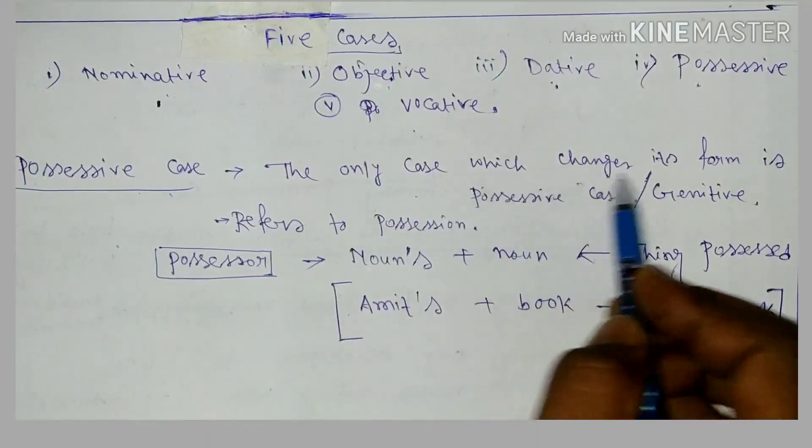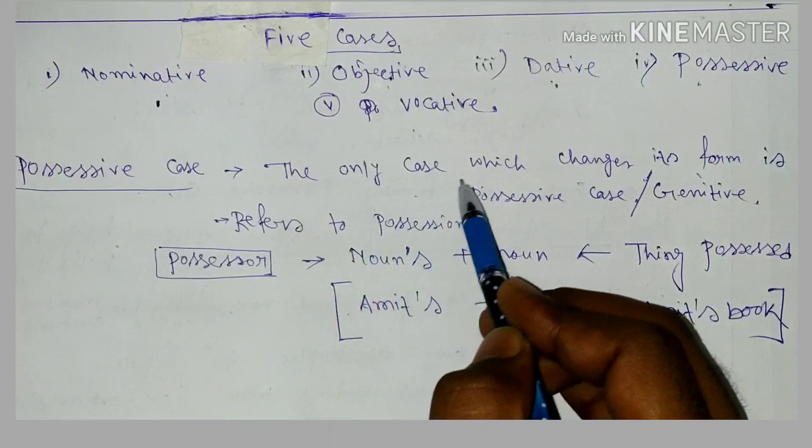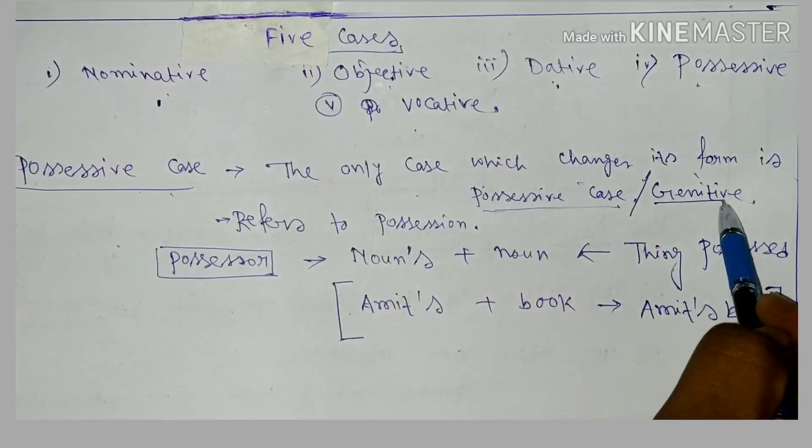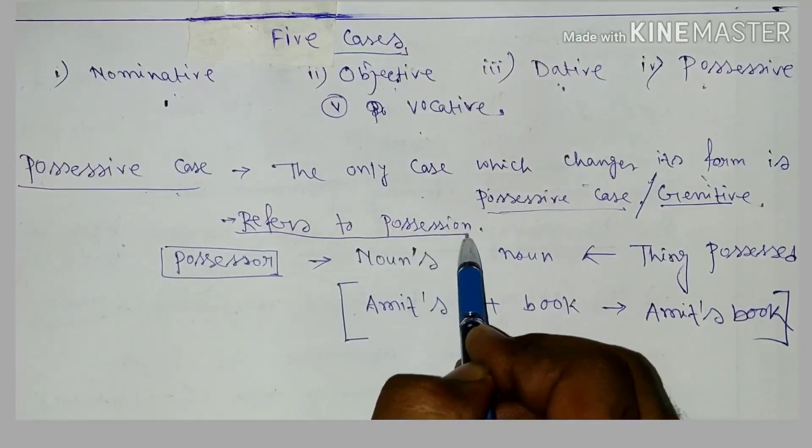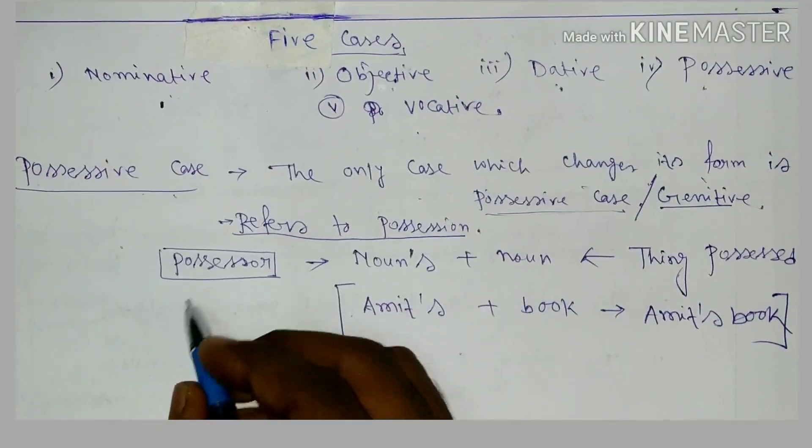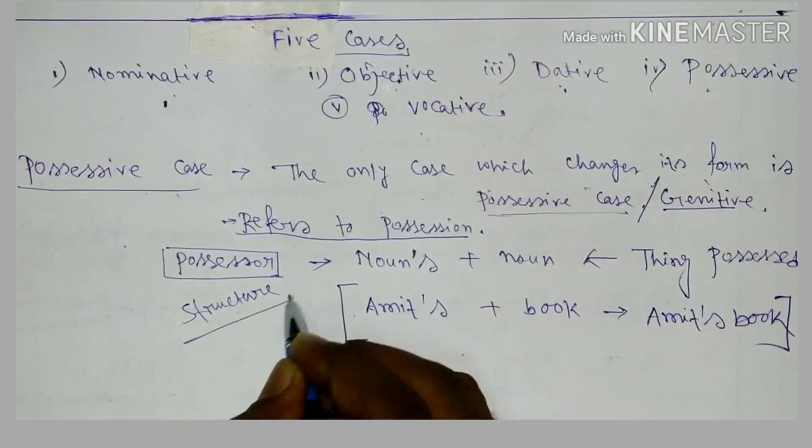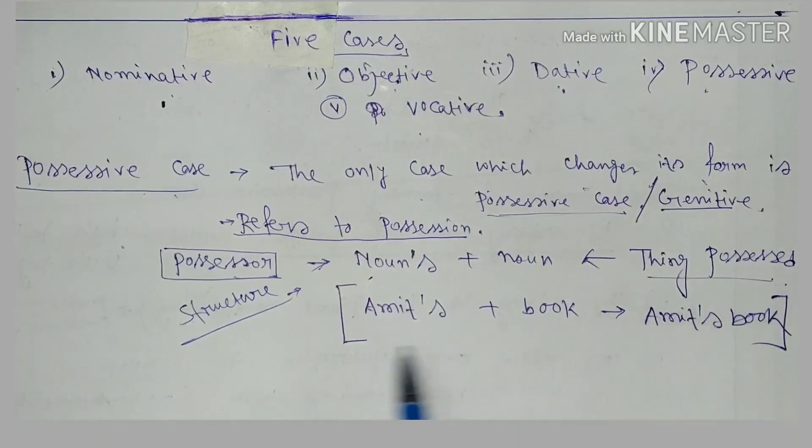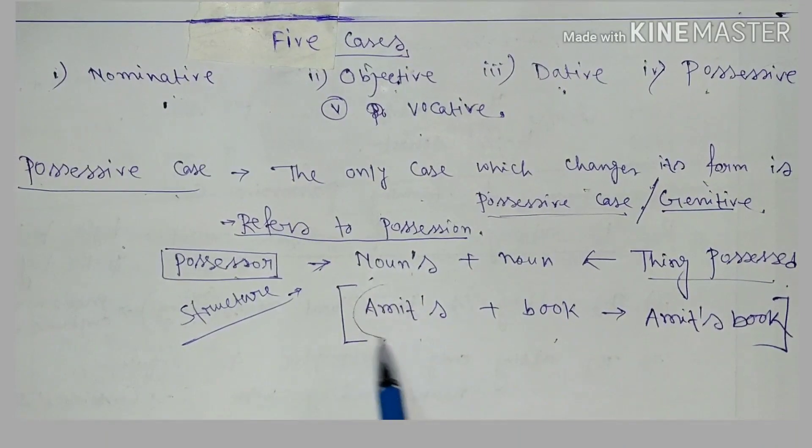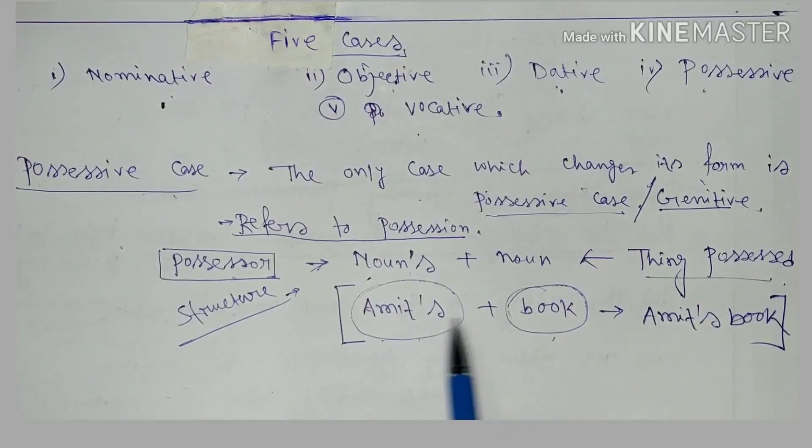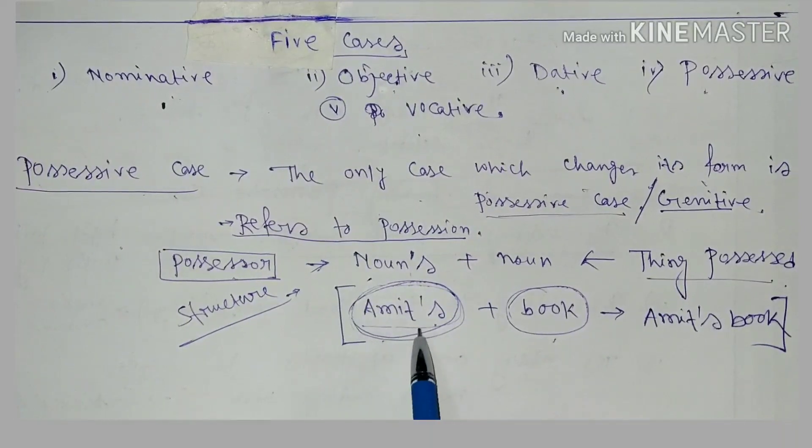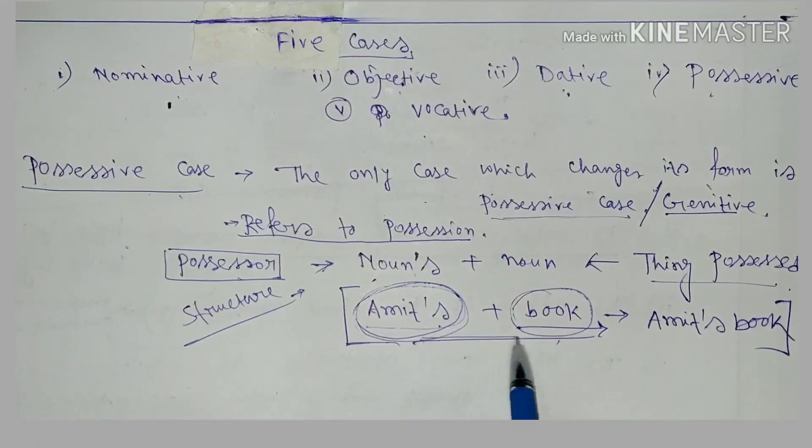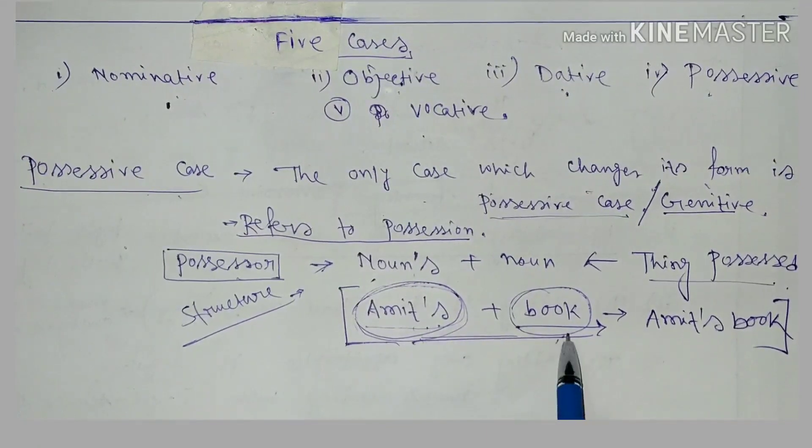Possessive case is the only case which changes its form. It is also called genitive case, which refers to the possessor's structure. The structure is: possessor comes first, then the thing possessed. Like Amit's book, so Amit is the possessor and book is the thing which is possessed by Amit.